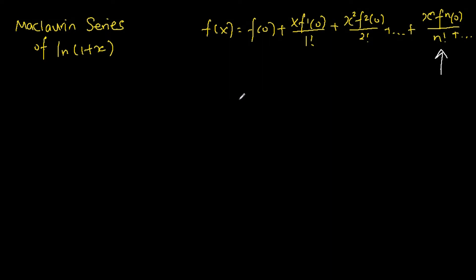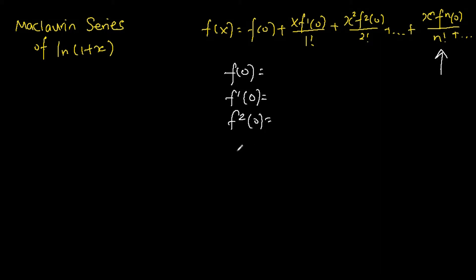Before we are able to express the function in terms of the Maclaurin series, I have to find f(0), which means the function evaluated at x equals 0; f'(0), differentiating the function one time and evaluating at x equals 0; f''(0), differentiating two times; f'''(0), differentiating three times; and f''''(0), differentiating four times and evaluating at x equals 0.